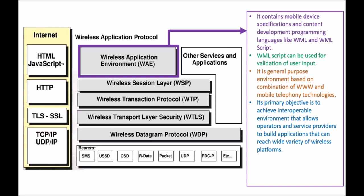WAE is a general purpose environment based on a combination of World Wide Web (WWW) and mobile telephony technologies. WAP's primary goal is to achieve an interoperable environment, allowing operators and service providers to build applications that can reach a wide variety of wireless platforms. It uses URL, which is Uniform Resource Locator, and URI, which is Uniform Resource Identifier, both used for addressing.